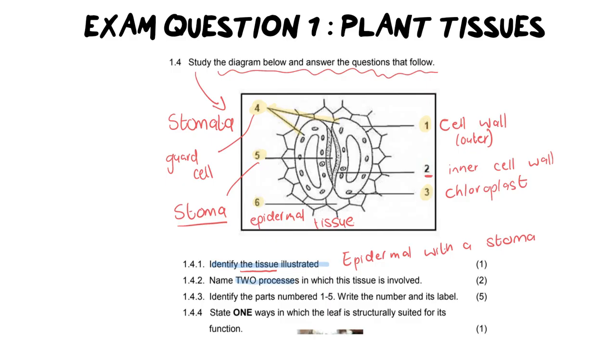Moving on to our next question. Number two says, name two processes in which this tissue is involved. Just a little top tip grade tens. When it says name two, you can only name two. If you name three, we will mark the first two and ignore the third answer. Even if the third answer is correct and the first two were wrong, it doesn't matter. So what are our two processes? It's definitely going to be gaseous exchange, because that is where gases come and go. And also, let's not forget this is where transpiration takes place, which is where we lose water vapor and pull water up from the roots out through the stoma.